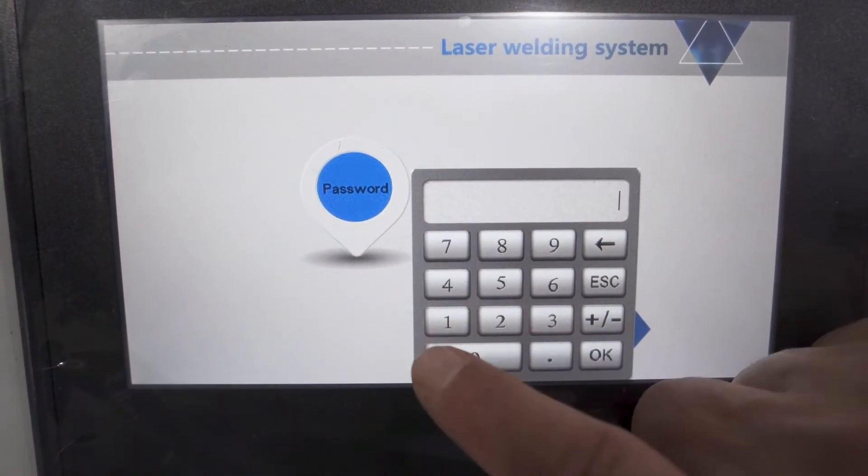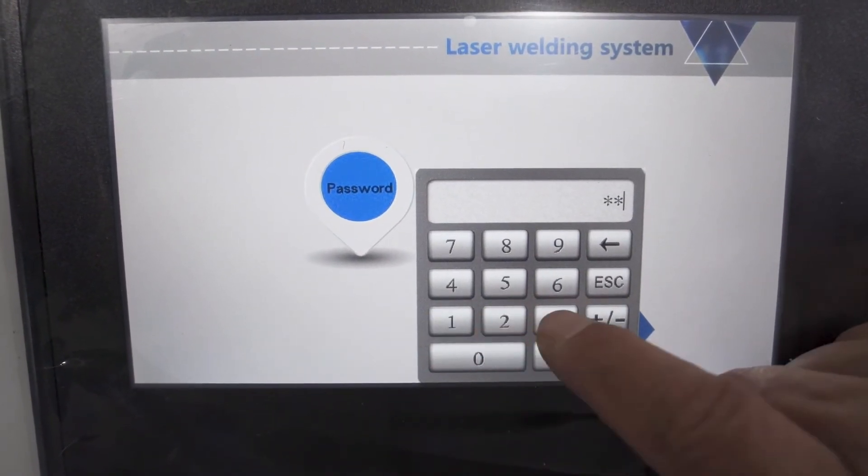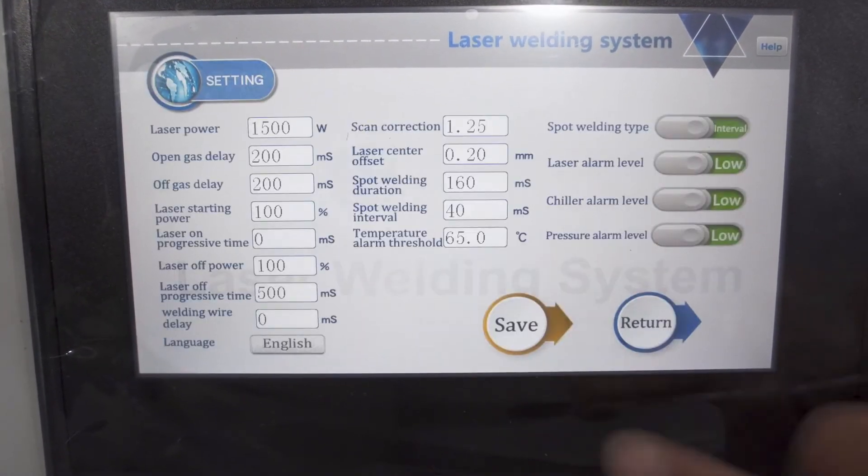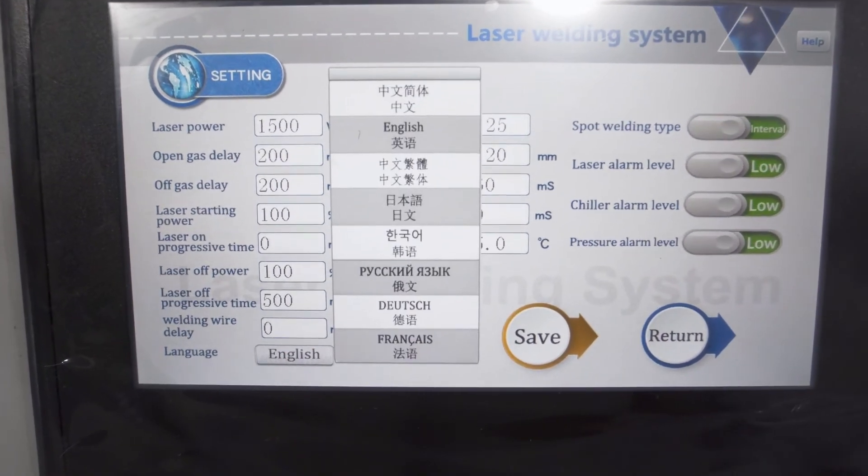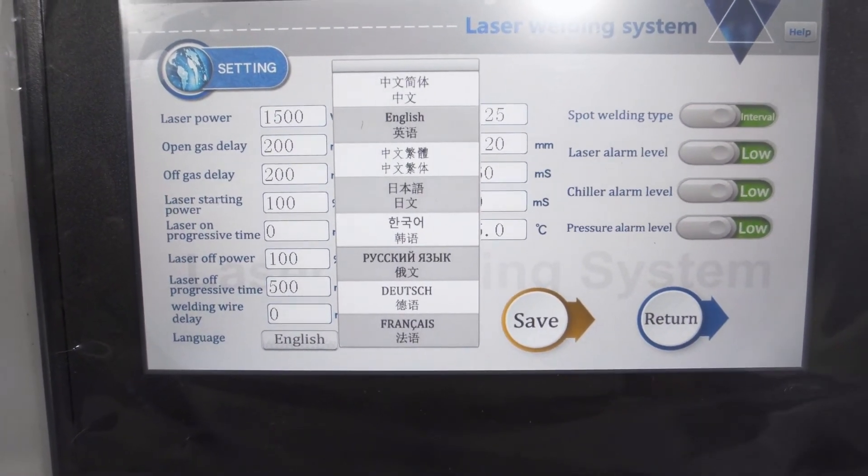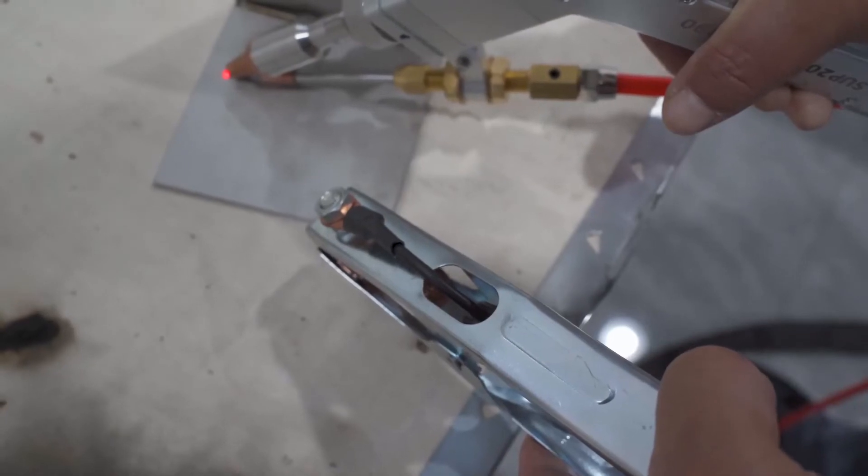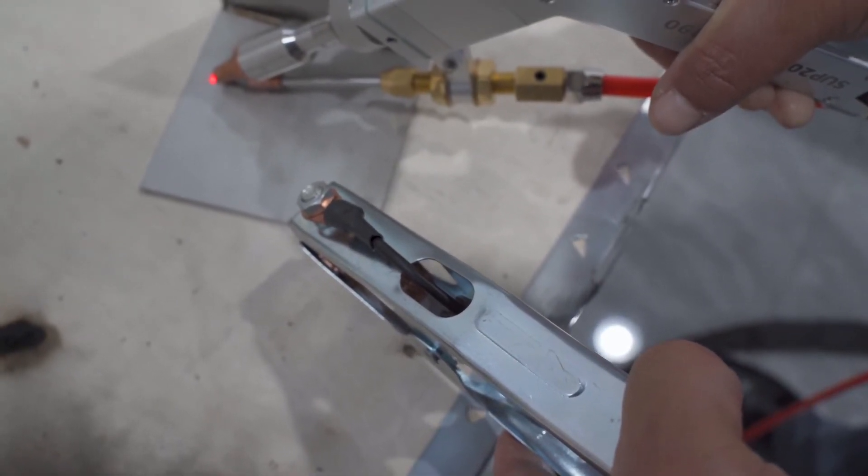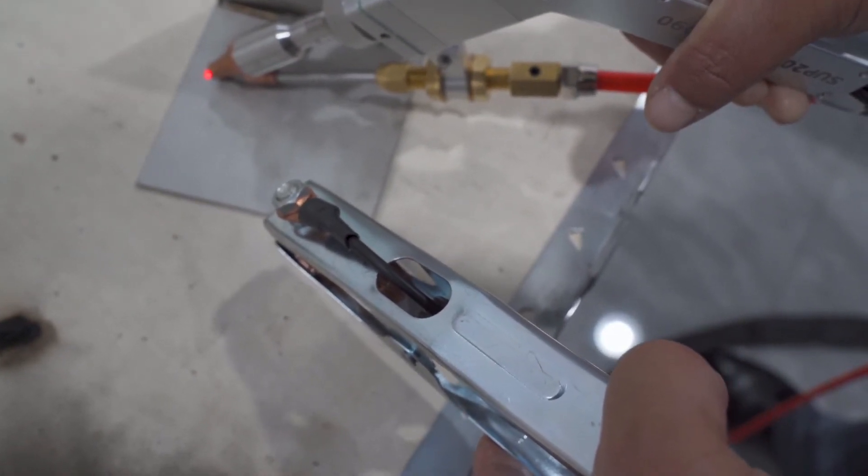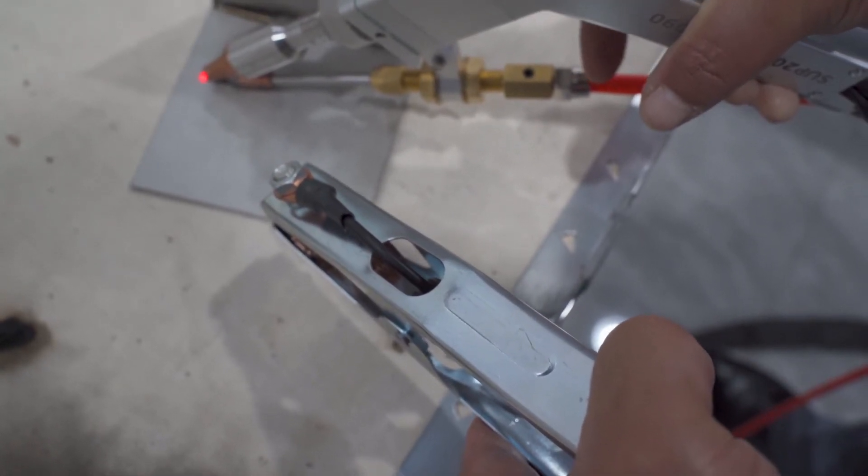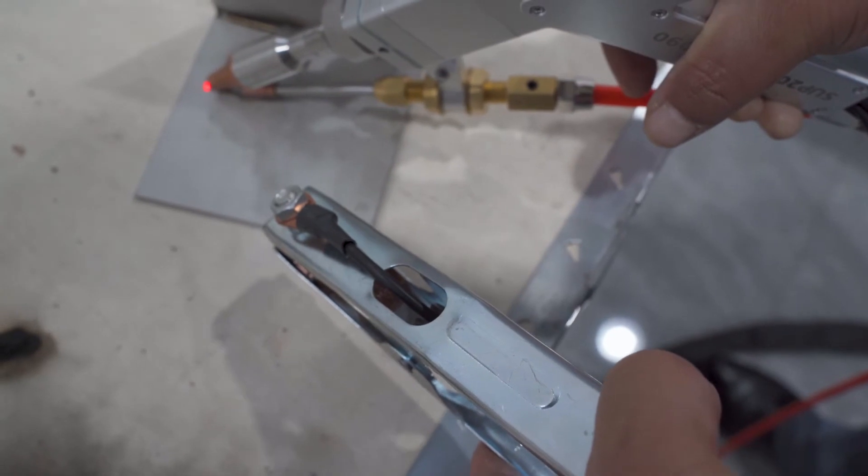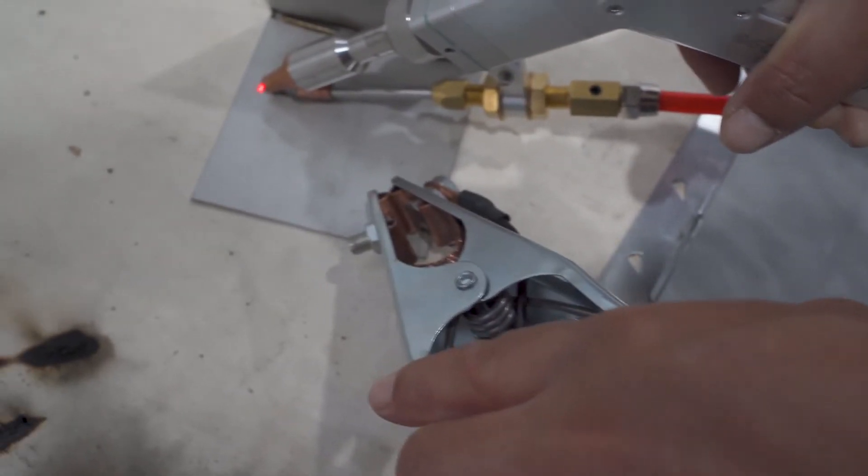You can change the language here. The password is 123456. This is the protection pencil. We push the trigger until it has no laser. If we touch the pencil with the metal board, then it will have laser.